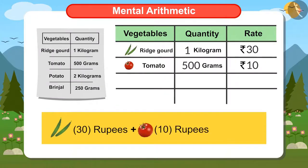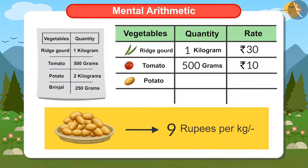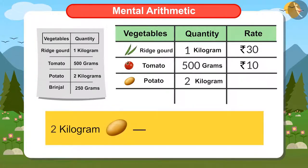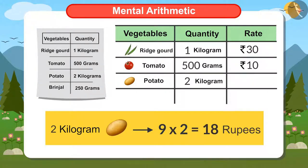Ridge gourd and tomato cost 40 rupees. Potatoes are 9 rupees a kilo and I have bought 2 kilos of potatoes. To find the cost of 2 kilos of potatoes, I have to multiply 9 by 2. Nine twos are 18, that is, I have to pay 18 rupees for potato.